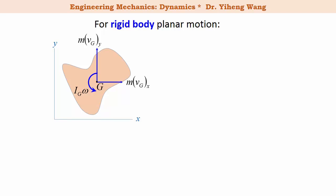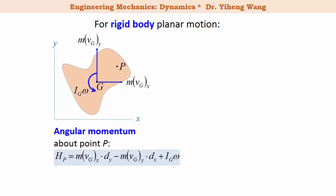The angular momentum is always calculated about a reference axis or a reference point for planar motion. To calculate the angular momentum of this rigid body about an arbitrary point P, we treat the linear momentum as if they are forces and calculate their moments about point P, and then add Ig·omega as if it is a free couple moment. dx and dy are the moment arms for the linear momentum.